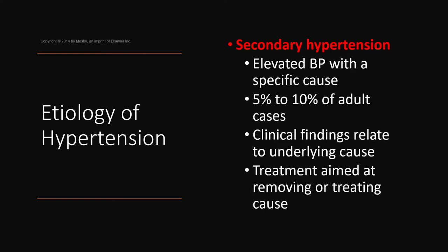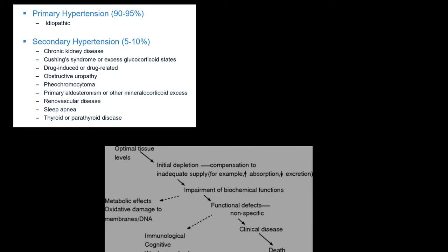Secondary hypertension causes include chronic kidney disease, Cushing's syndrome, and drug-induced causes. Drug-induced hypertension ties back to CoQ10 and drug-induced nutrient depletions — many medications patients are on can reduce nutrients that end up increasing blood pressure. Other secondary causes exist, but the majority of cases are primary.